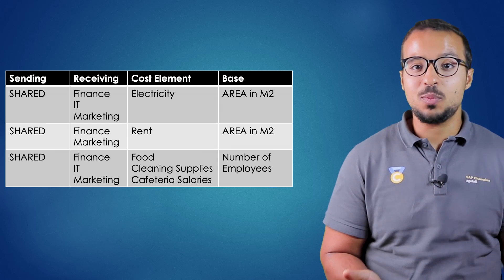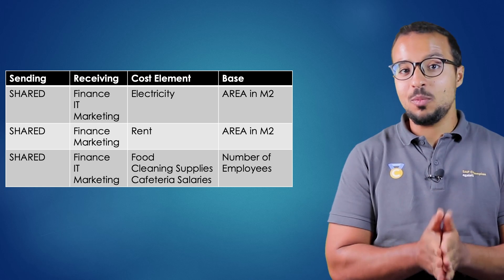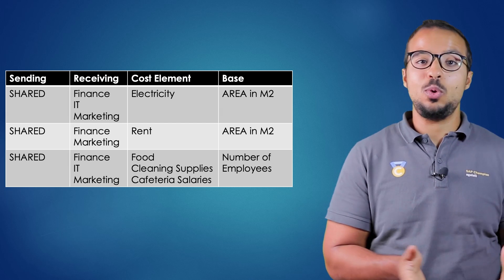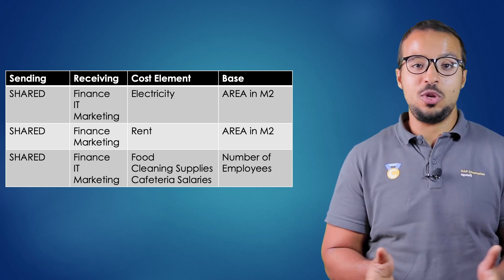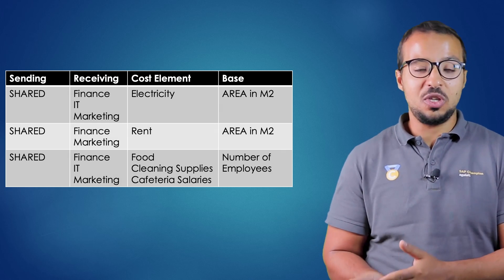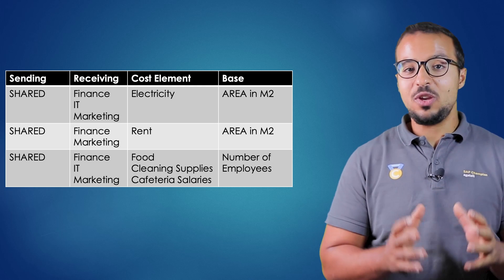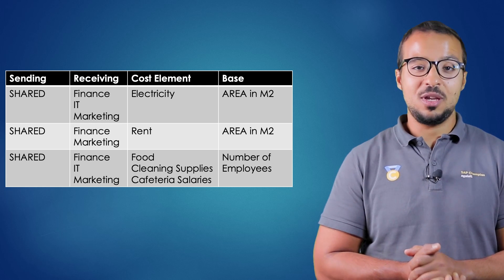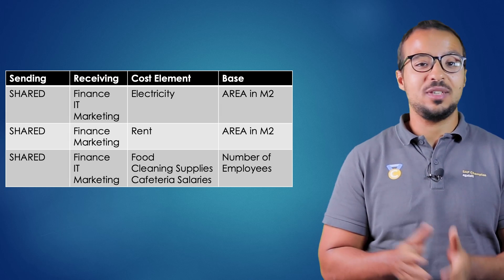For the cafeteria expense, we allocate based on headcount — the number of employees in each department. For example, if information technology has 20 employees and accounting has 10, then IT receives 2/3 and accounting receives 1/3 of the cafeteria cost. We can also allocate costs based on fixed percentages or fixed amounts.